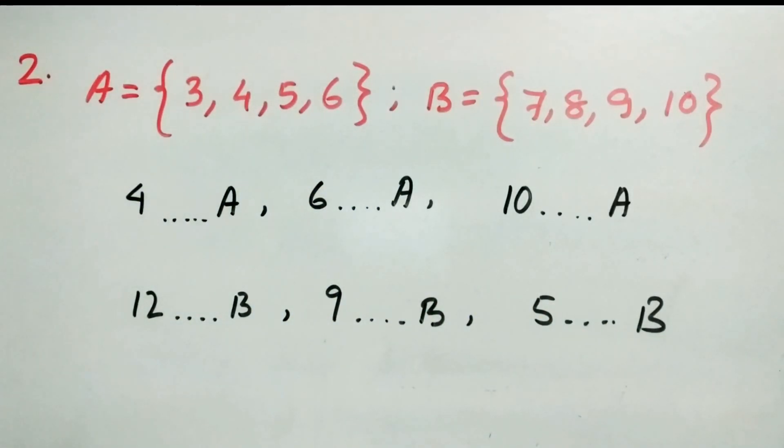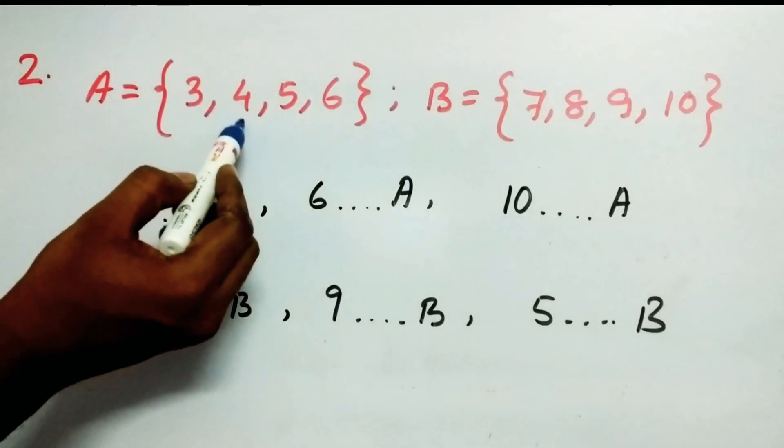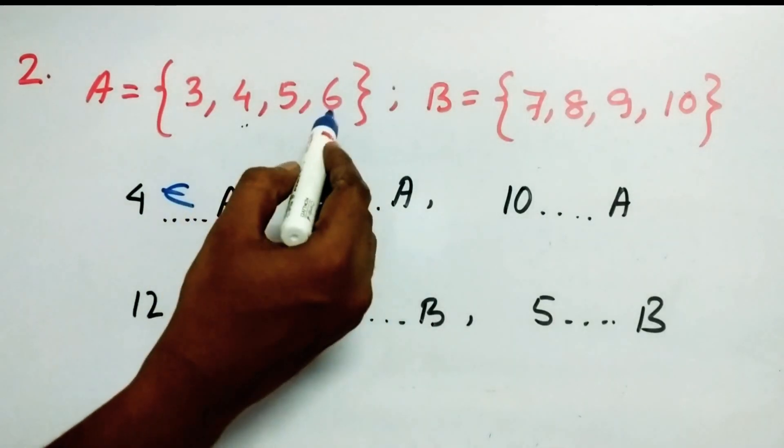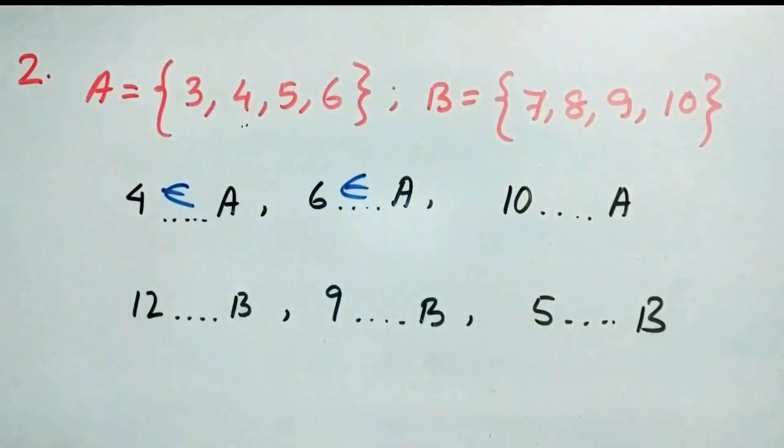So the first one is 4. Does it belong to A? So obviously this 4 is here and it belongs to A. So it belongs to A. Now next 6. 6 is here. So it belongs to A.